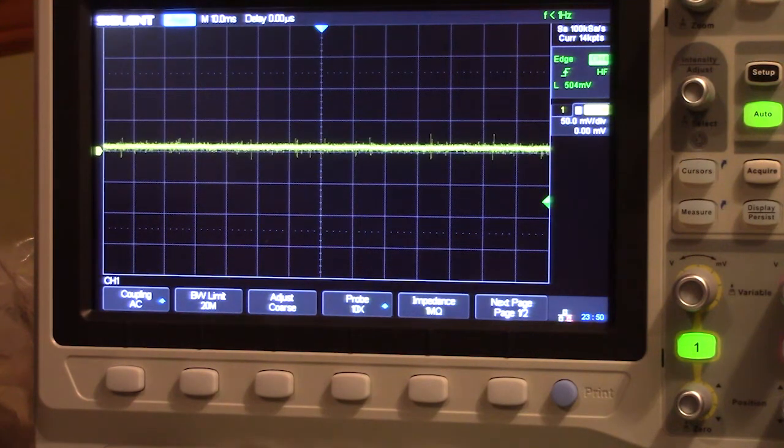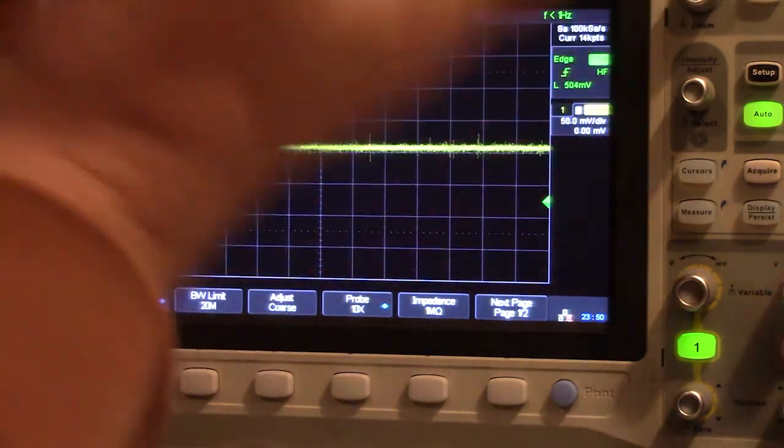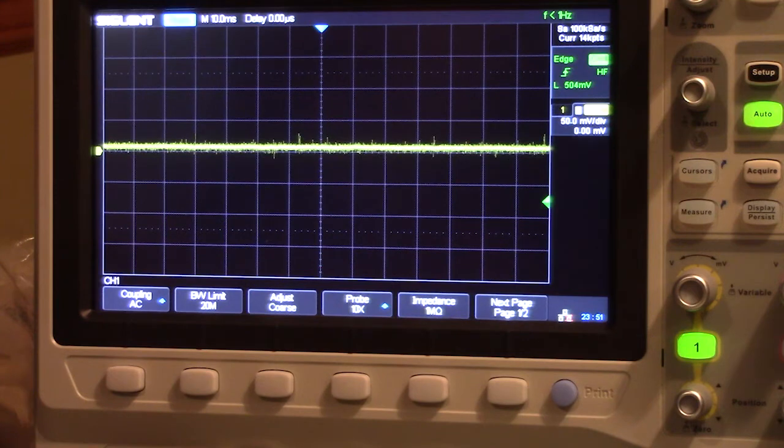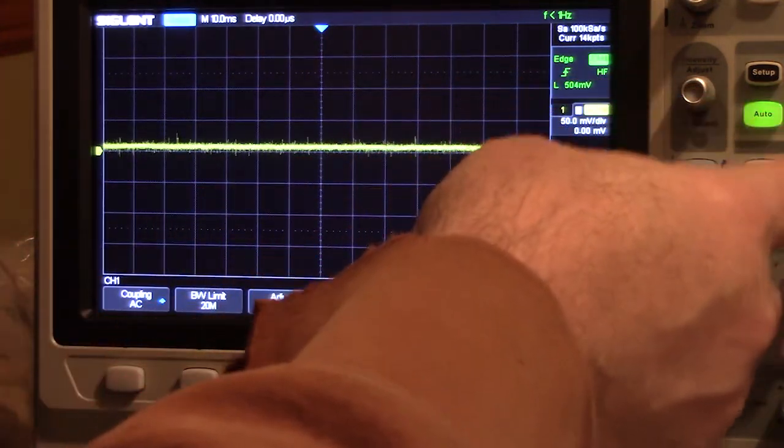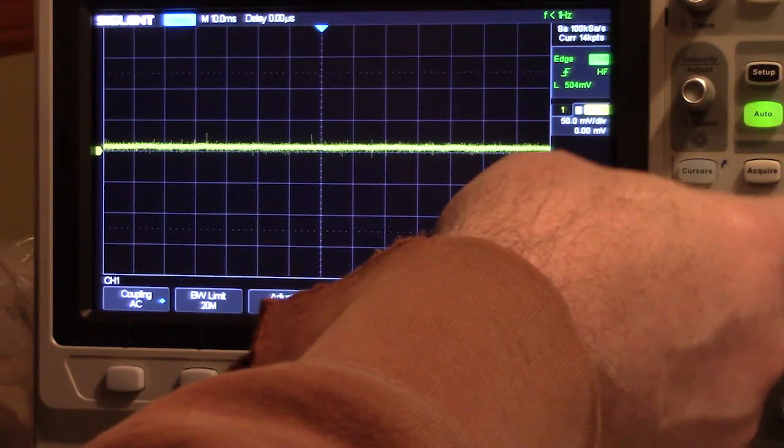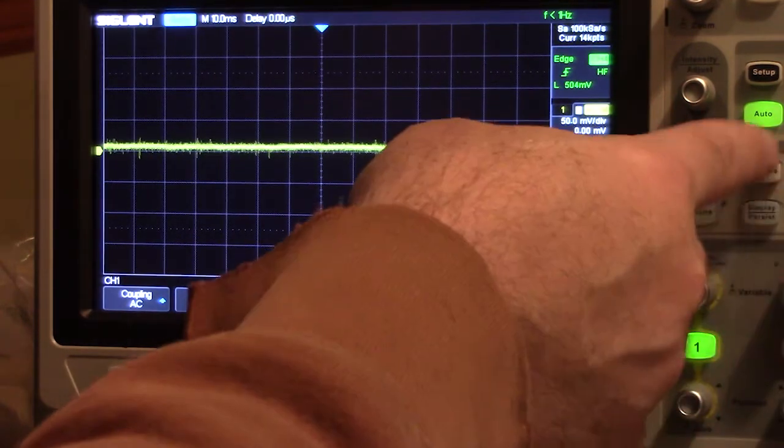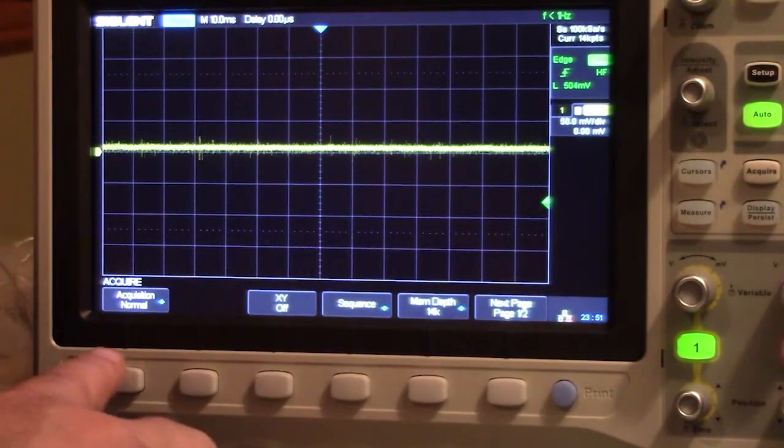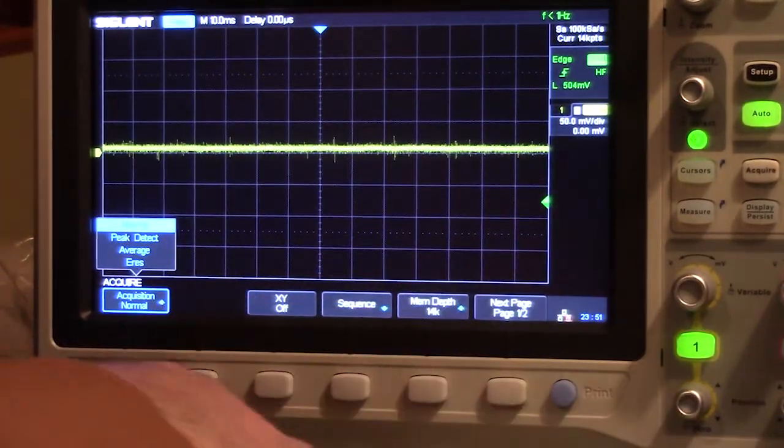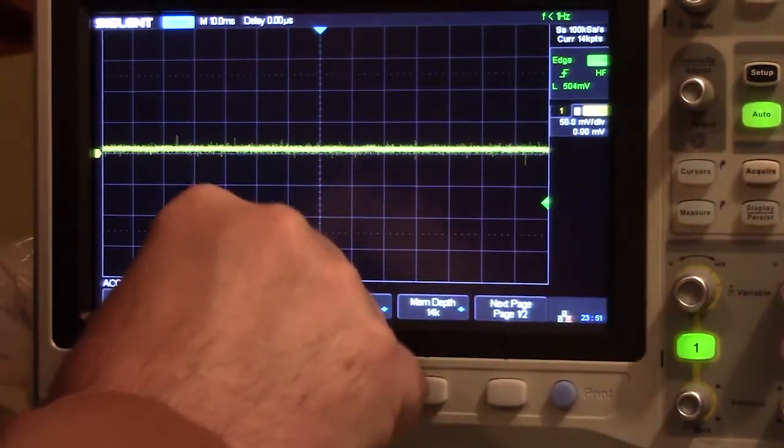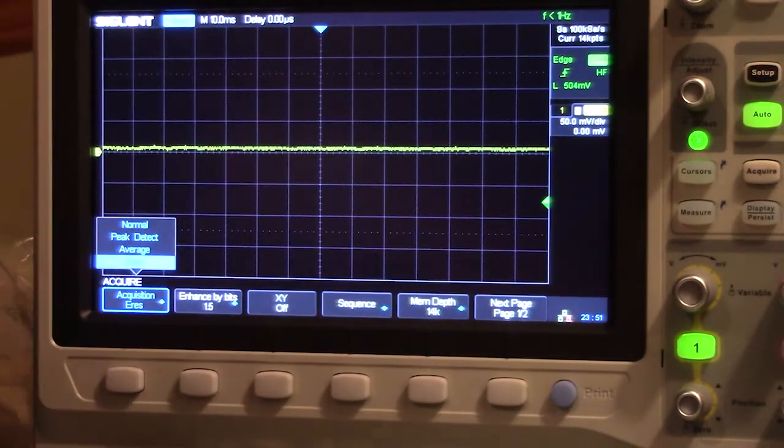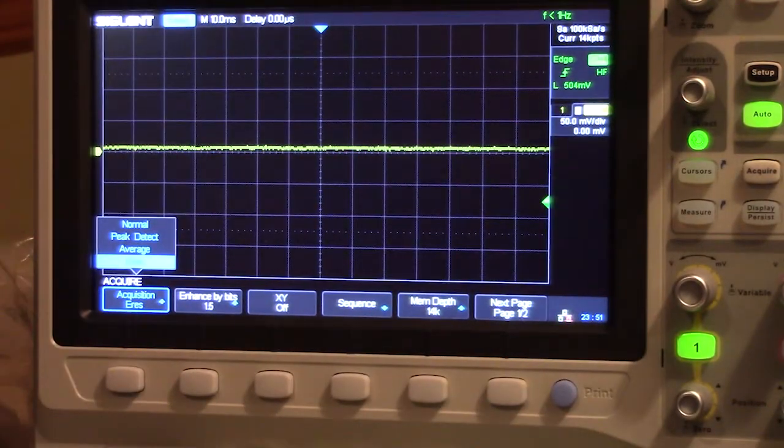That looks good. I got spikes there. We know those spikes are from the poorly shielded Siglent probes and we can actually fix that by going to acquire and change this to average and that'll filter some of that. And there we go, that's filtered those spikes out.